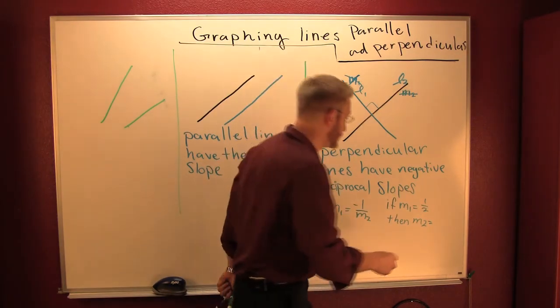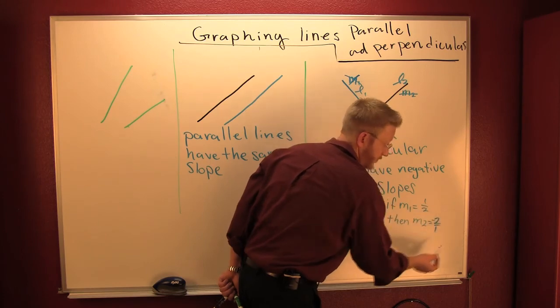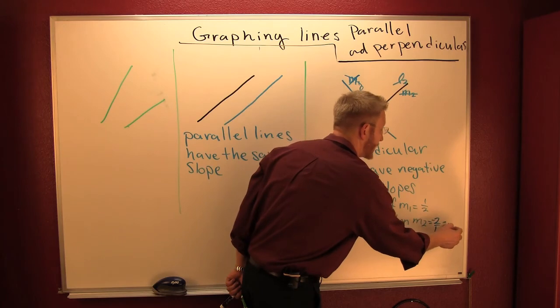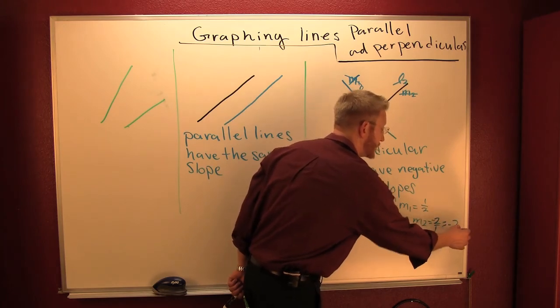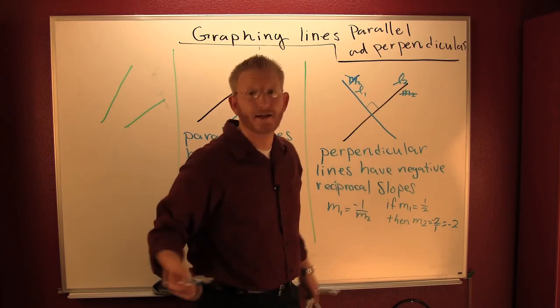Yeah. Want another reciprocal. Flip it, dog. Yeah. That's 2 over 1. Minus 2 over 1 because we're talking about perpendicular slopes. Or minus 2. That's it.